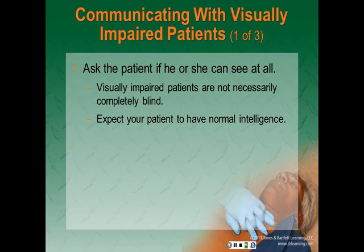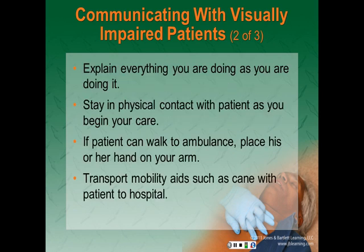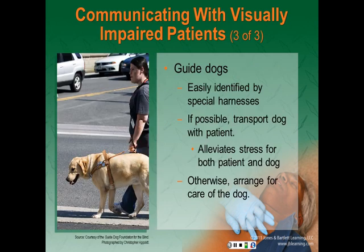The other type of patient we may have to deal with is a patient who is visually impaired. The first thing we should do is ask the patient if he or she can see at all, as visually impaired patients are not necessarily completely blind. Expect your patient to have normal intelligence — just because they are visually or hearing impaired does not decrease their intelligence. Explain everything you are doing as you are performing your actions. Stay in physical contact with the patient as you begin your care — that sense of touch is very important. If the patient can walk to the ambulance, place his or her hand on your arm. Transport any mobility aids, such as a cane, with the patient to the hospital. If your patient has a guide dog, identified by a special harness, if possible the dog should go with your patient, as it alleviates stress for both the patient and their guide dog.